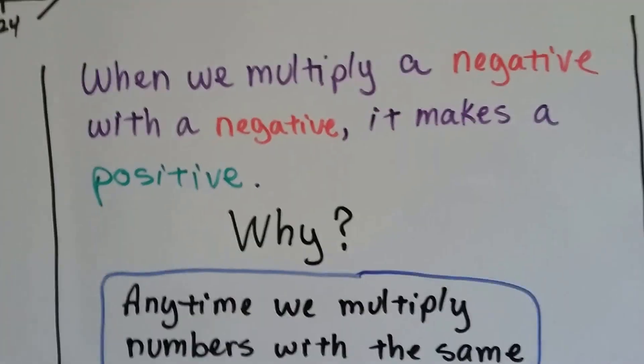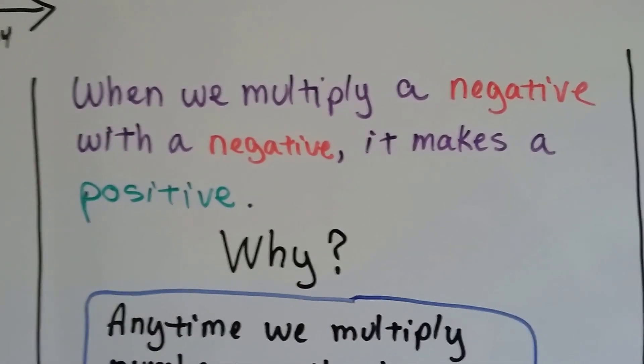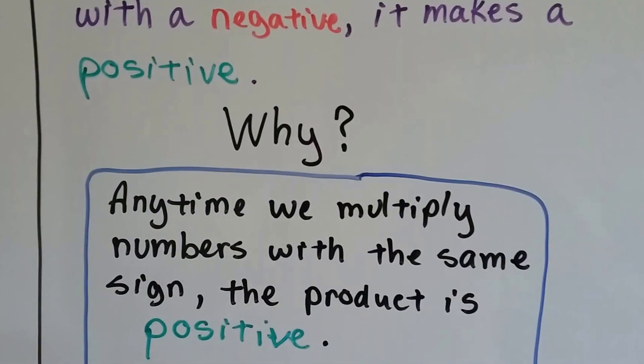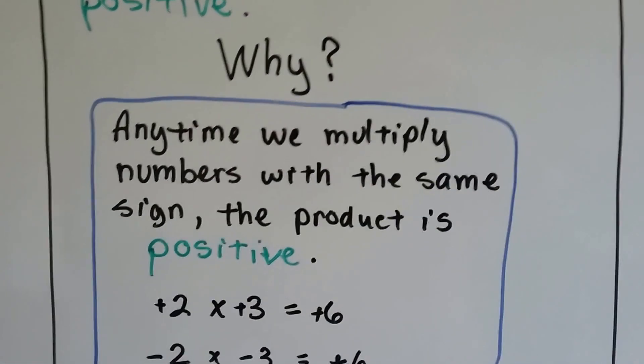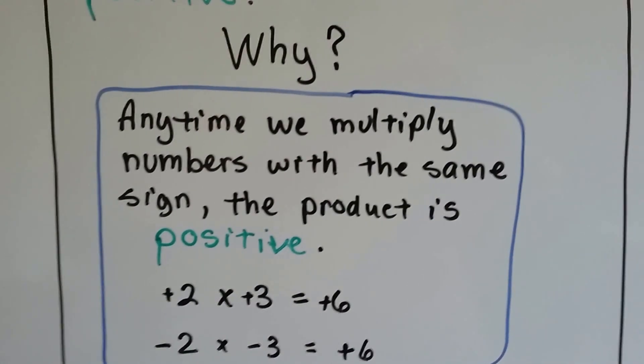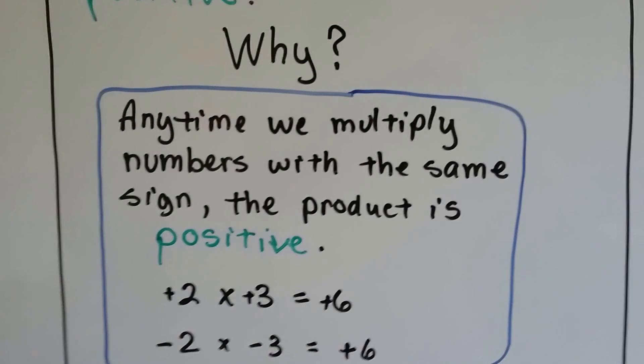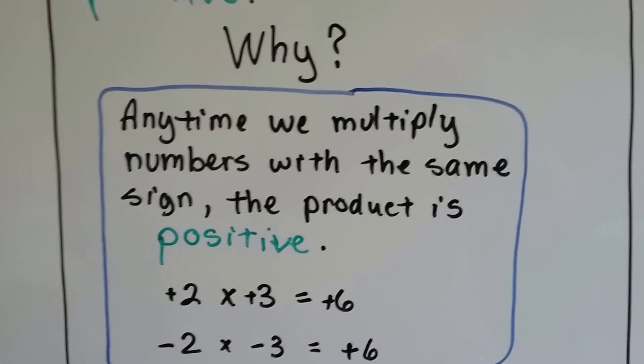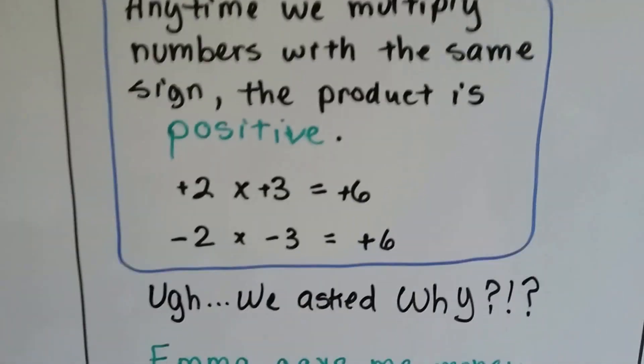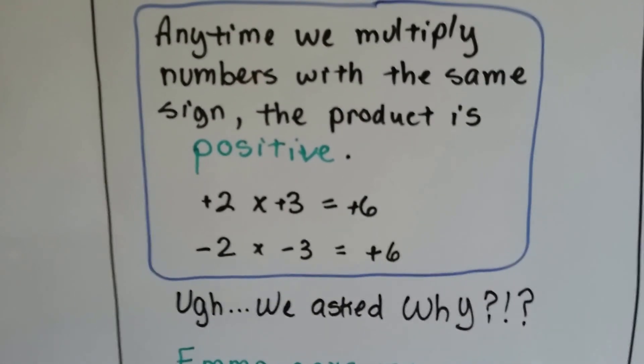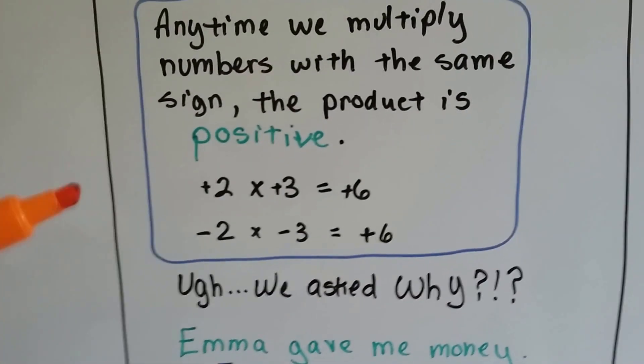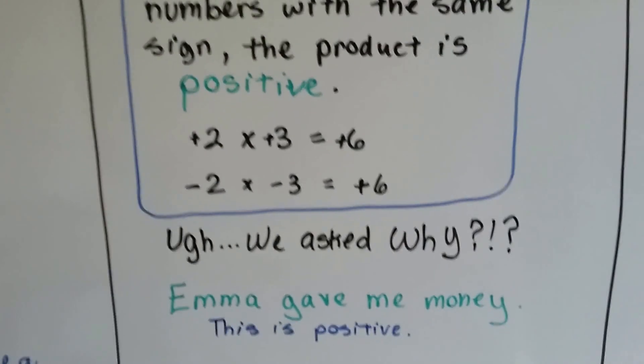Well, when we multiply a negative with a negative, it makes a positive. But why? Why is that happening? Any time we multiply numbers with the same sign, the product is positive. Positive 2 times positive 3 is positive 6, those are like signs. Negative 2 times negative 3 is positive 6, those are like signs, and we get a positive answer. Okay, we said why though, right? That doesn't tell us why, it just tells us what we're supposed to do. We want to really, really, really know why.